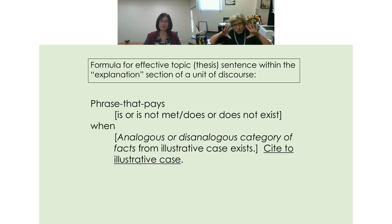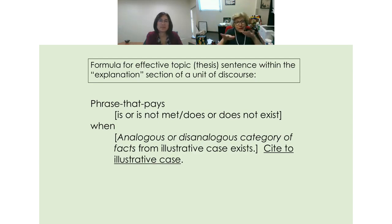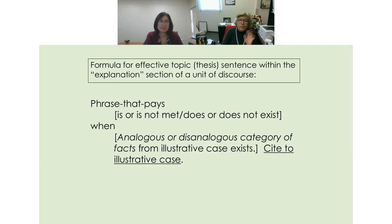What I guided my students to articulate was the analogy: both the security guards who had the video available and the employee who didn't talk to the guard who had confronted the customer — they both had information available that would exonerate the person accused of shoplifting, that they didn't access. That connection goes in the topic sentence. 'Probable cause does not exist if the store employee has exonerating information available that they do not consult.' That very categorical statement lays the foundation for the rule application and makes the reader want to read that paragraph.